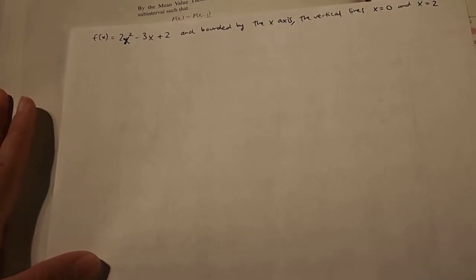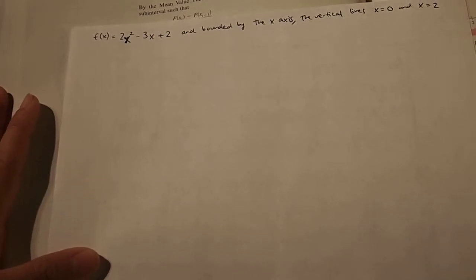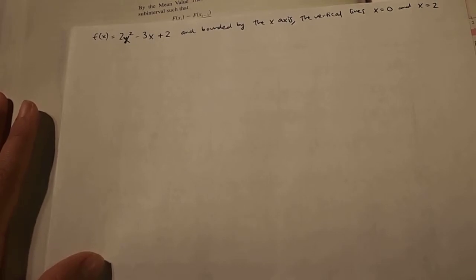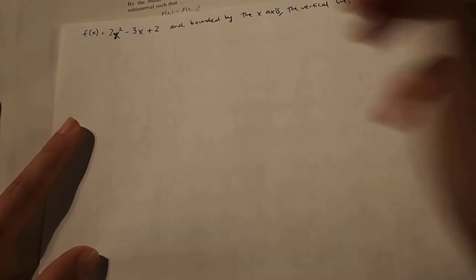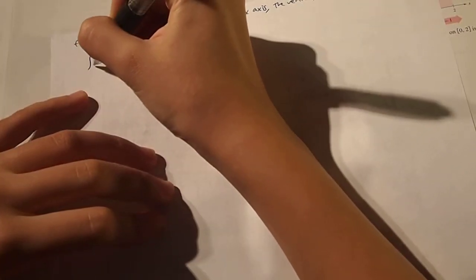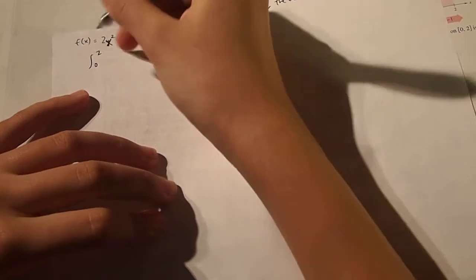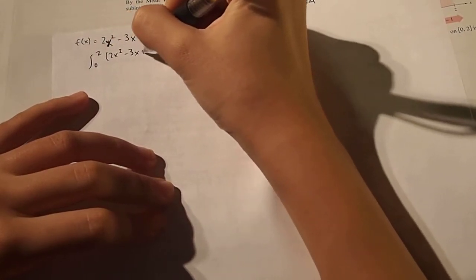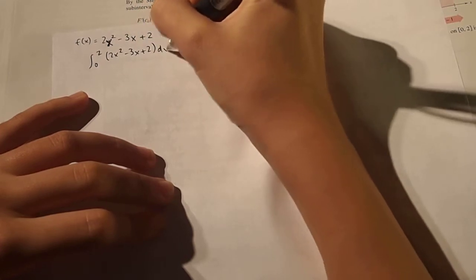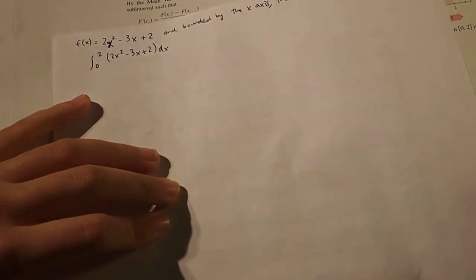So let's do a practice problem. We have f(x) equals 2x squared minus 3x plus 2, and it's bounded by the x-axis and the vertical lines x equals 0 and x equals 2. So let's rewrite this in an integral format. It would be integral from 0 to 2 of 2x squared minus 3x plus 2 dx.